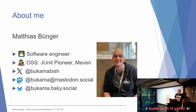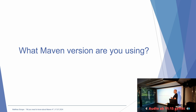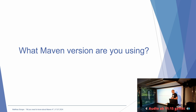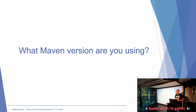Bevor wir ein bisschen über Maven 4 sprechen, mal so eine Runde gefragt: Welche Maven-Versionen benutzt ihr denn so in Production? Wer benutzt Maven 3.9? So, die Hälfte, ein bisschen weniger. 3.8. Irgendwas davor, 3.6 oder 3.3.9. Okay, ihr habt ein Problem. Ihr wisst, dass die Version seit Jahren nicht mehr supportet wird. 3.8 und 3.9 sind die letzten Releases, die noch supportet werden.